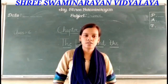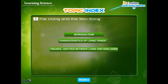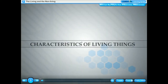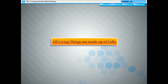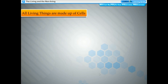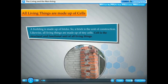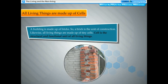We will see the characteristics of living things and how they are different from non-living things. All living things are made up of cells. Just as a building is made up of bricks, a brick is the unit of construction — likewise, cell is the structural and functional unit of all living things.